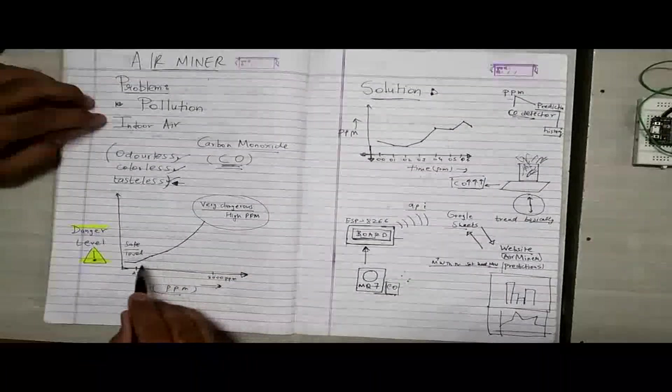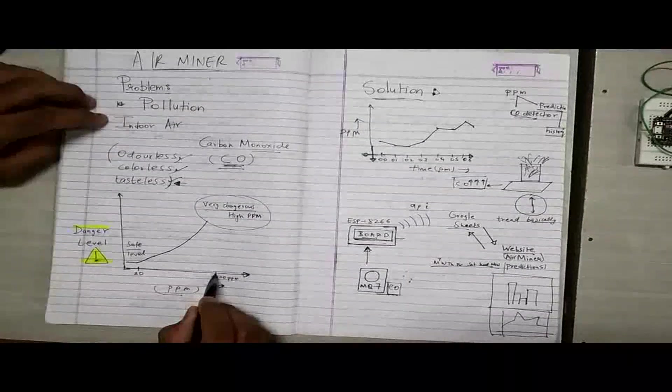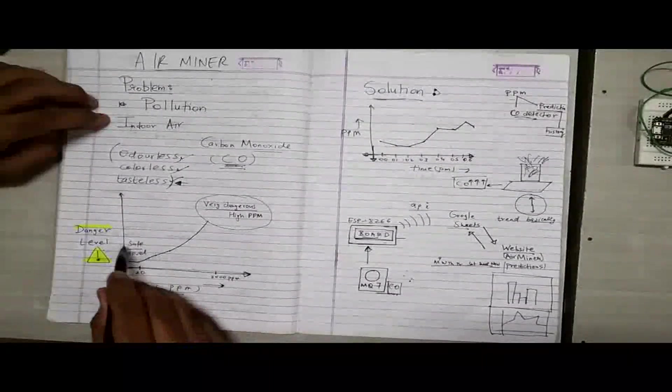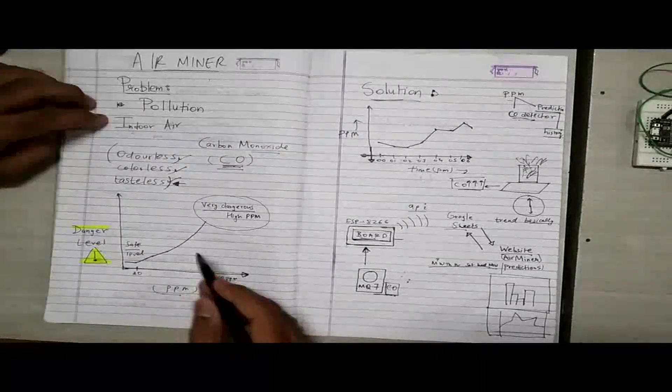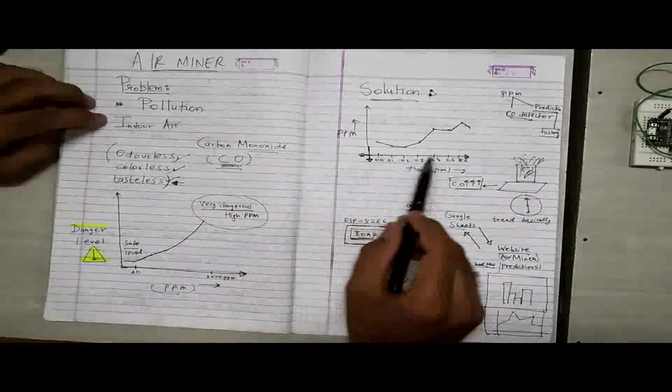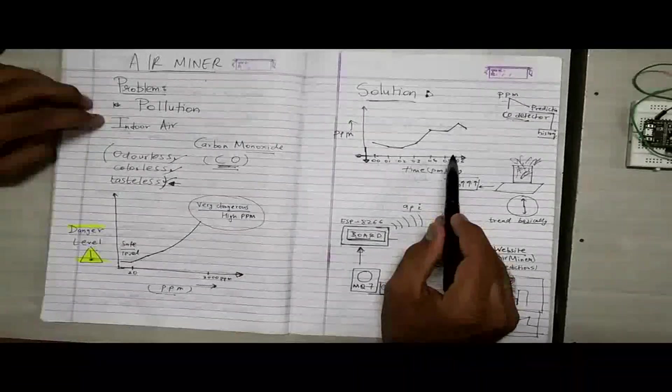This graph explains this very simply. When the PPM levels increase, the danger level increases. The danger level means danger to your health and so on and so forth. So what is our solution to this? How do we let the users know that the PPM levels are rising in their house?